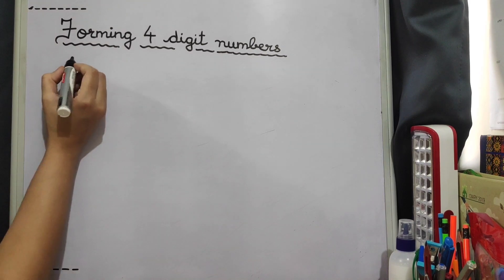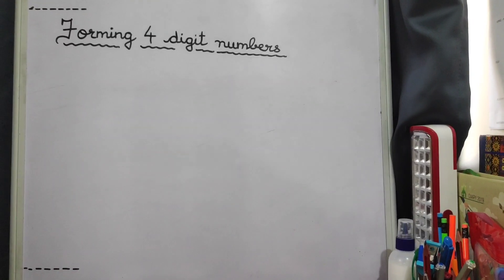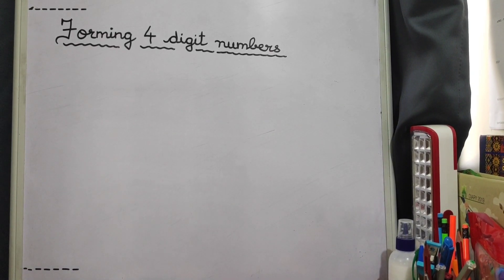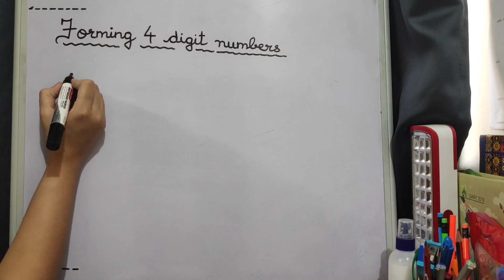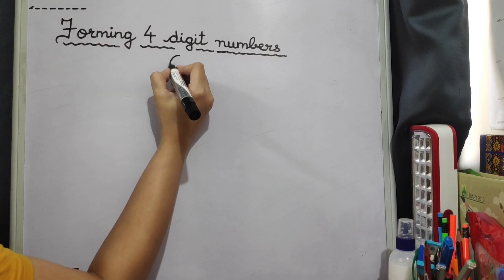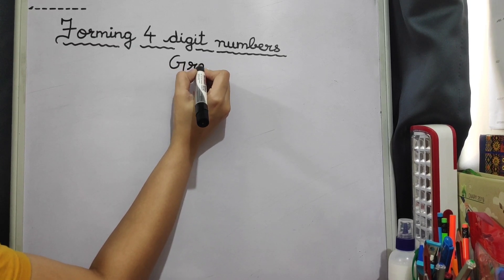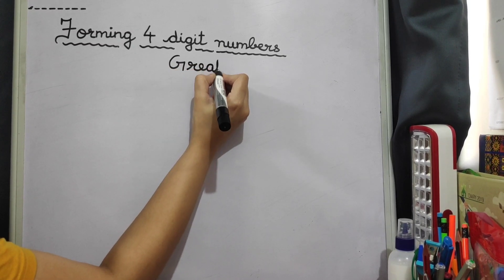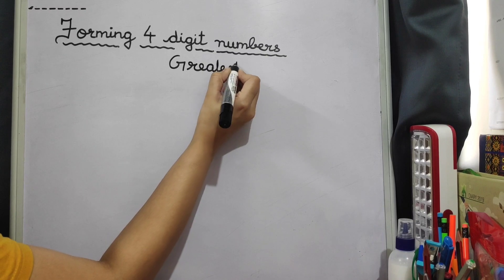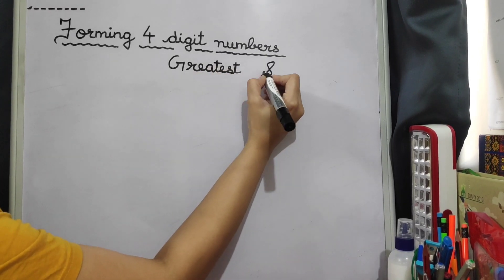Here kids, the four digit numbers you will form with the help of the digits given to you. You will form the greatest and the smallest number using the digits given to you. Now how to do that? Let's see.